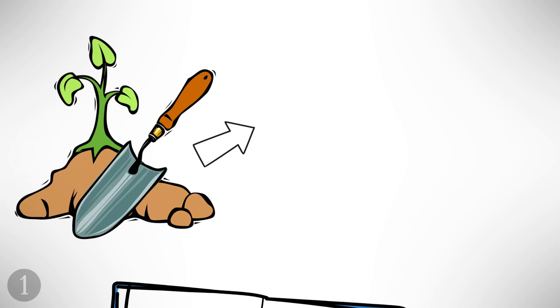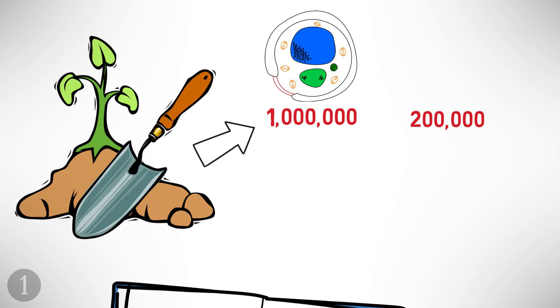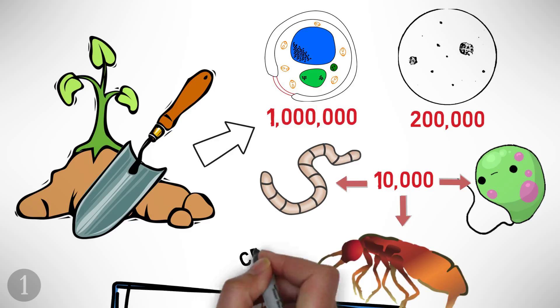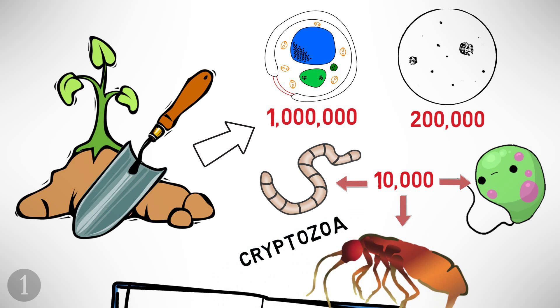Number one: if you go outside and grab a handful of soil, it will contain up to a million plump yeasts, 200,000 molds, about 10,000 protozoans and assorted rotifers, flatworms, roundworms and other microscopic creatures known collectively as cryptozoa. A large portion of these will also be unknown.